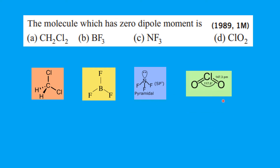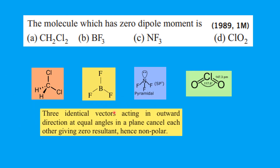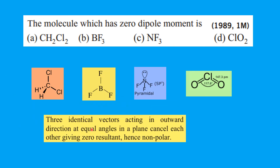In all these four, the trigonal planar structure has equal directions and equal angles. So that is the one which is planar and non-polar, and all the dipole moments will cancel each other. So this is the one which has zero dipole moment. The answer is B.